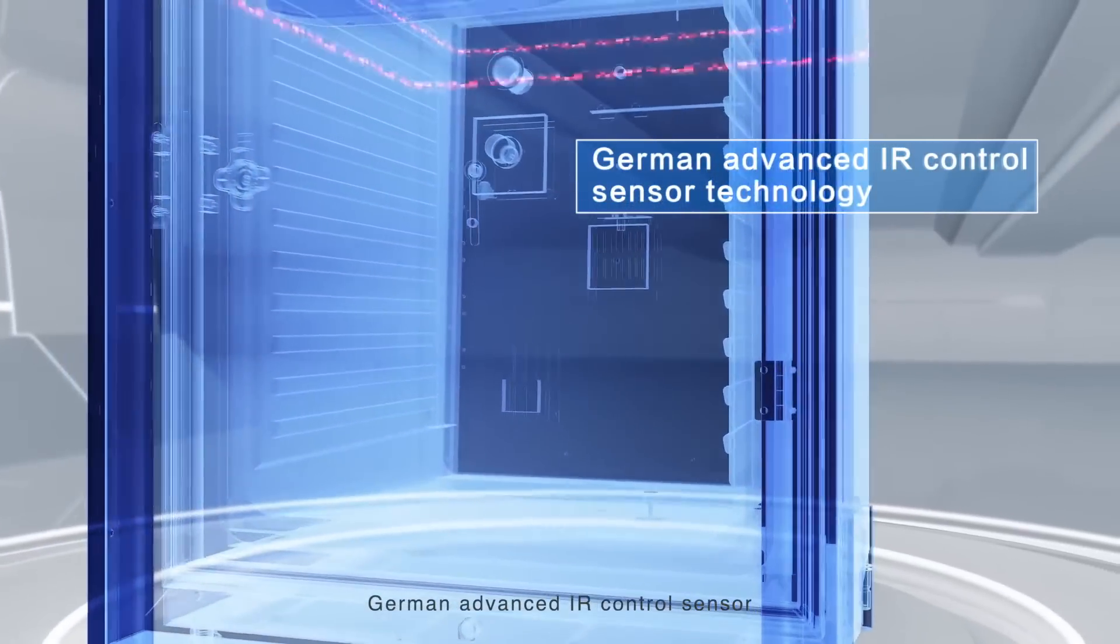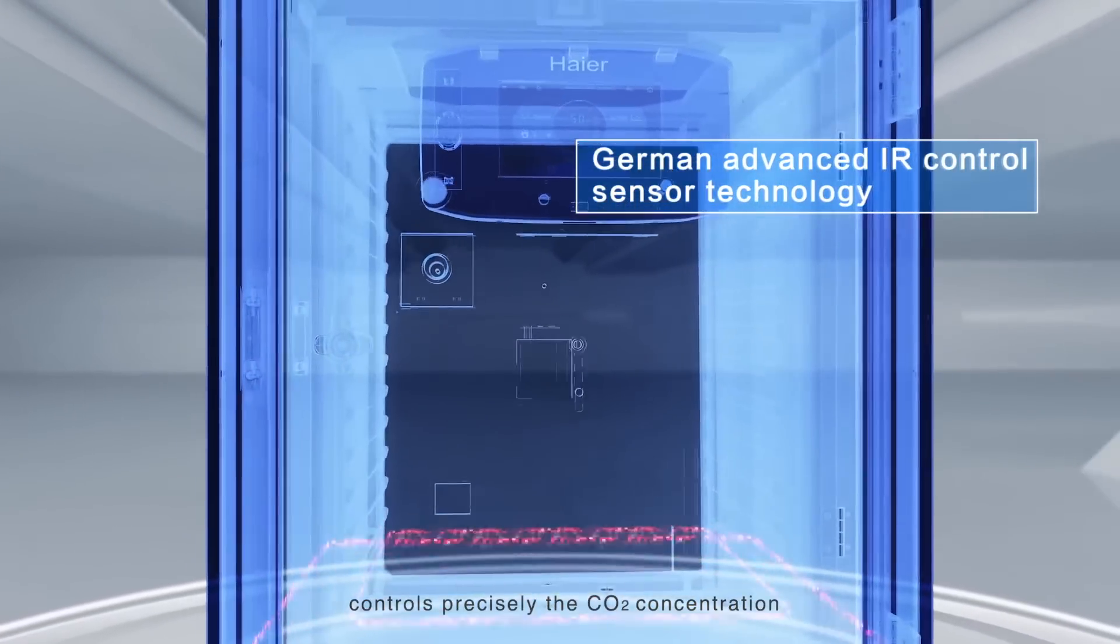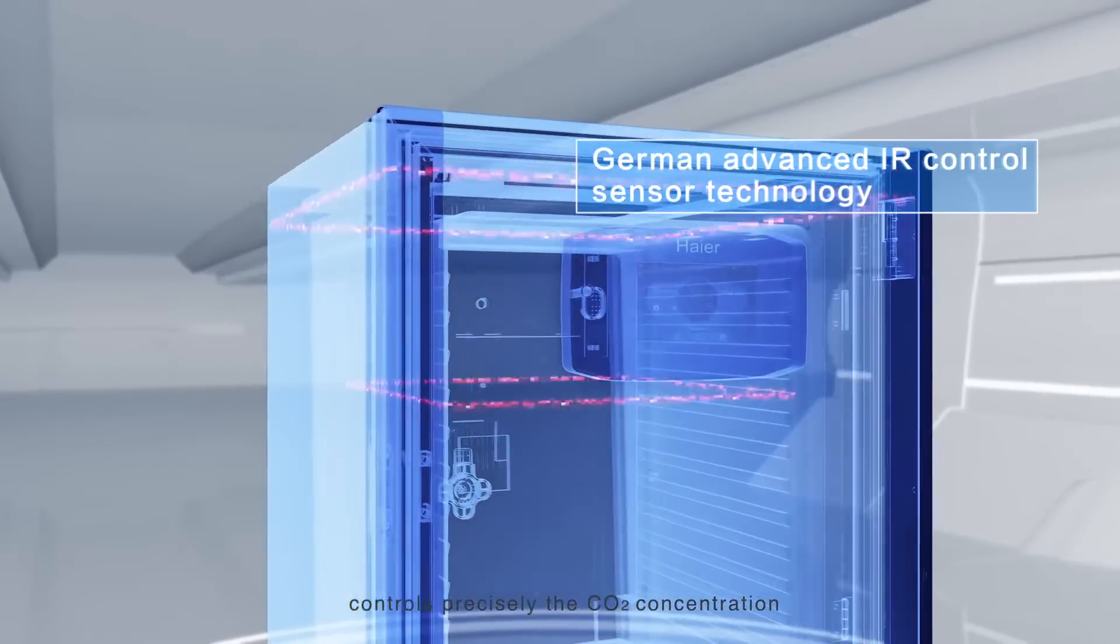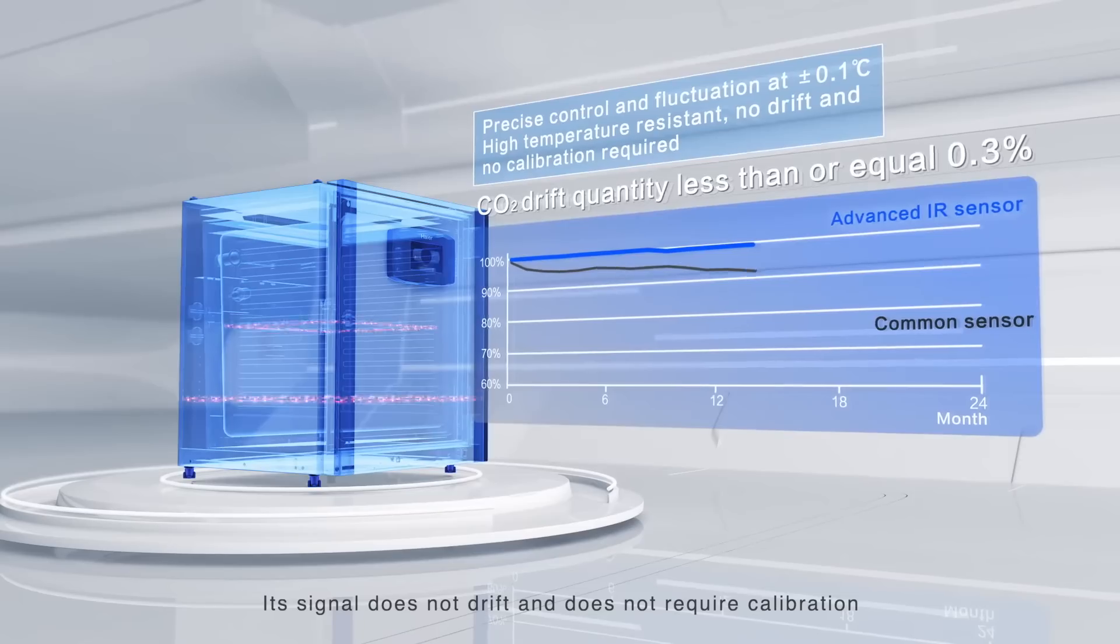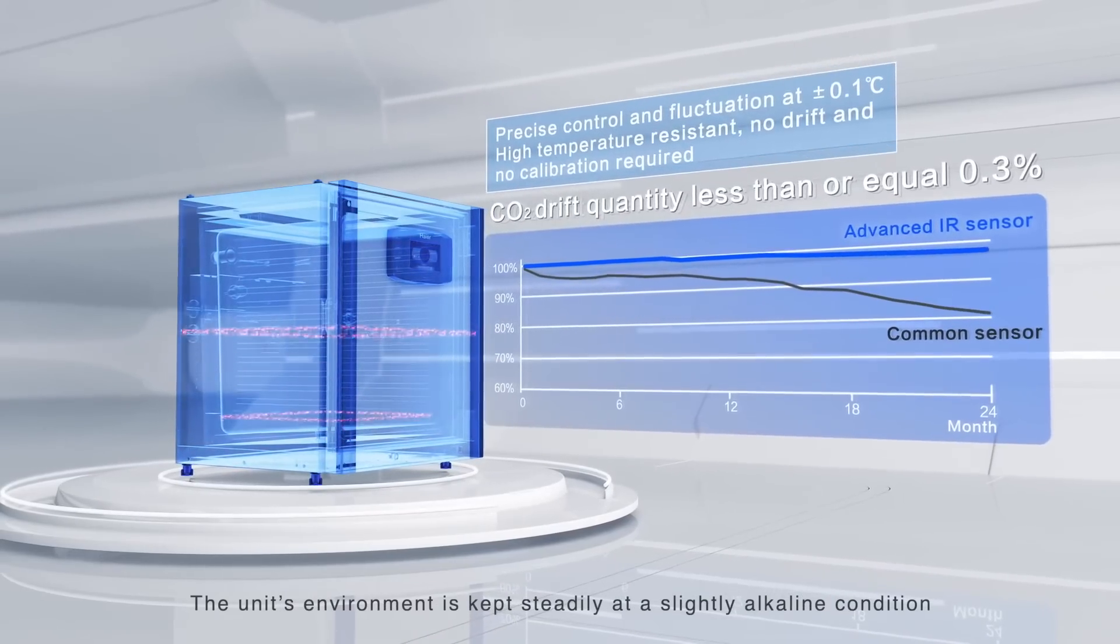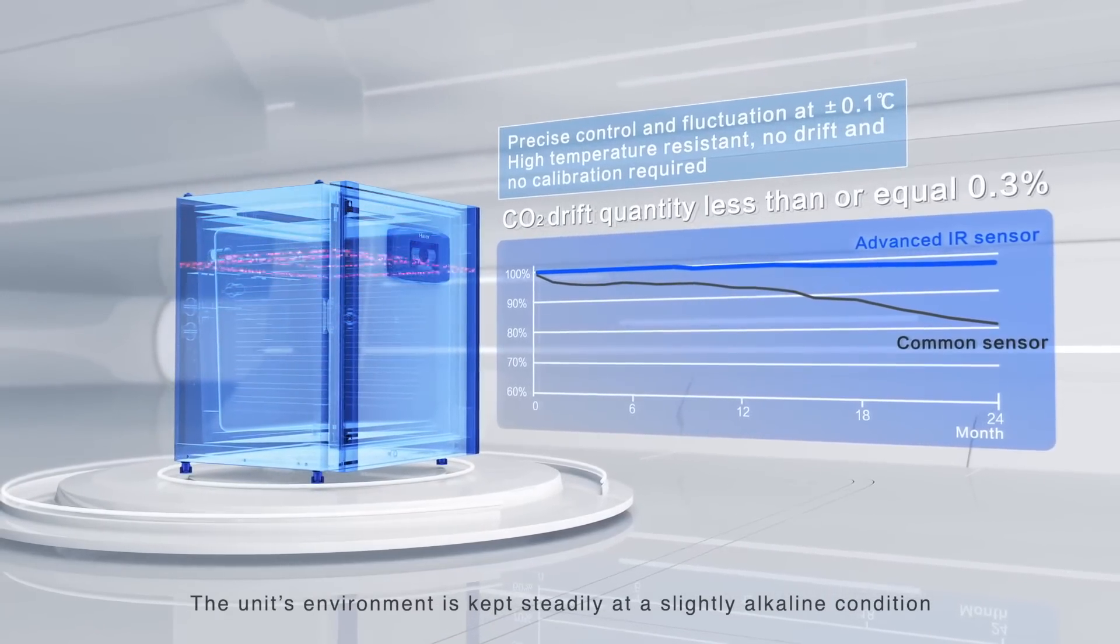German advanced IR control sensor controls precisely the CO2 concentration. It can sustain high temperature. Its signal does not drift and does not require calibration. The unit's environment is kept steadily at a slightly alkaline condition.